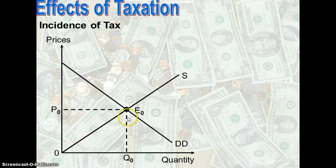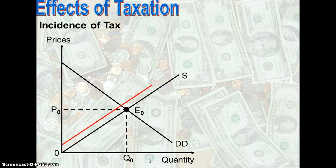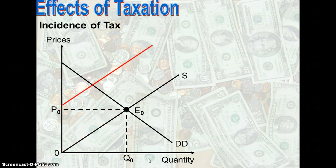Shall we look at this diagram? We have prices, quantity of a product, a supply curve, a downward-sloping demand curve, and an equilibrium point at price P0 and quantity Q0. When the government imposes a tax, the supply curve will shift up.